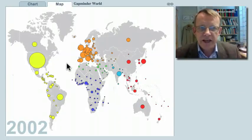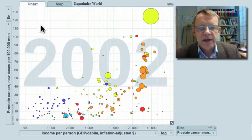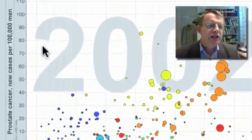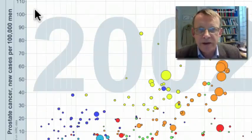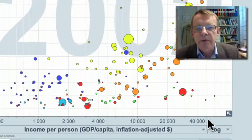Now to show you the risk of getting diagnosed, I have to move to another type of chart. Here, the bubbles are still the countries and the size is the number of men diagnosed. The vertical axis shows the number getting prostate cancer diagnosis per 100,000 men, and the horizontal axis is income per person.